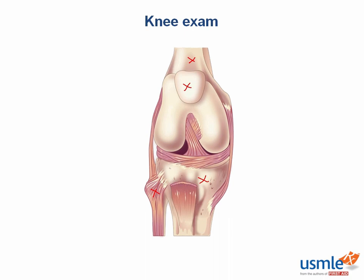The first two structures, and the most likely to be tested, are the cruciate ligaments — the anterior and posterior cruciate ligament, fondly referred to as the ACL and PCL. Why are they called cruciate? Because cruciate means cross-shaped, which is exactly what they do — they form a cross.